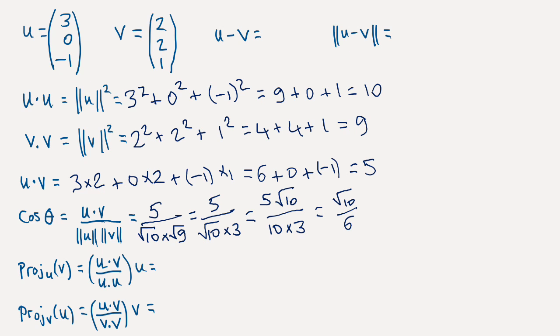Let's move on to projections. And first of all, let's do the projection of v onto u. And that's given by this formula. Dot product of u with v over the dot product of u with itself. And as a fraction, multiply that by the vector u. So u dot v is 5. U dot u is 10. So we'll have 5 tenths of u, so half of u. So we'll have 3 over 2, 0 and minus 1 over 2.